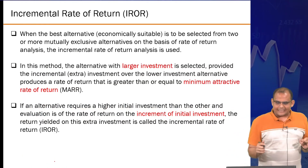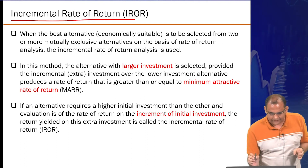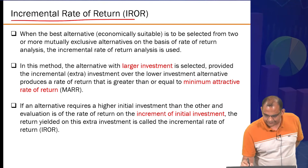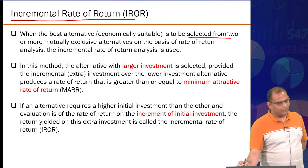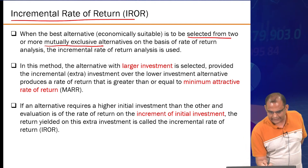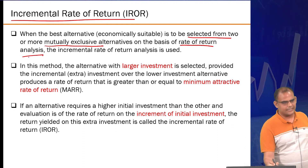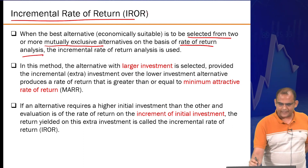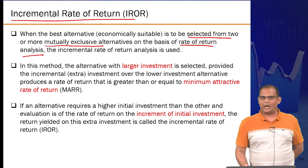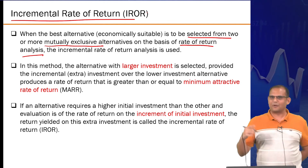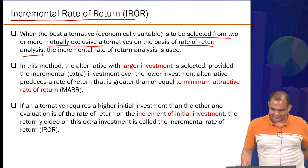This concept is called incremental rate of return. When the best alternative is to be selected from two or more mutually exclusive alternatives on the basis of rate of return analysis, this method is useful — it's called IROR. In this method, the alternative with the larger investment is selected given that the extra investment produces a rate of return at least greater than or equal to your MARR.